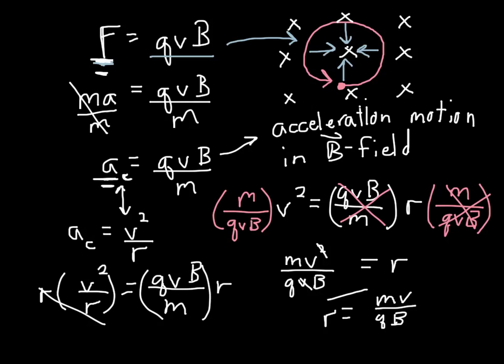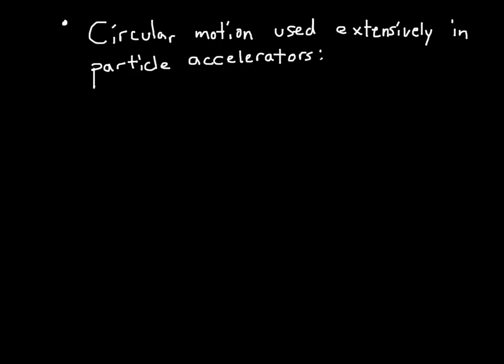The radius of the circle made by a charged particle moving in a magnetic field depends on mass, velocity, charge, and the magnetic field. This ability to take a charged particle and make it move in a circle with radius r equal to mv divided by qB is used extensively in particle accelerators, including the largest experiment ever done by mankind — the Large Hadron Collider — where protons are smashed together at close to the speed of light.